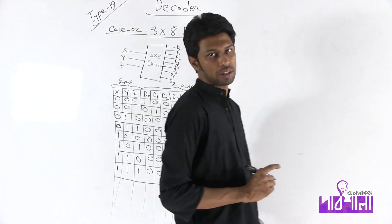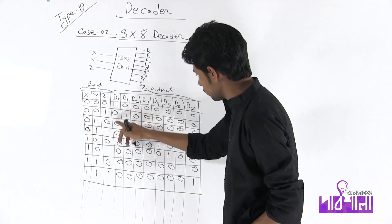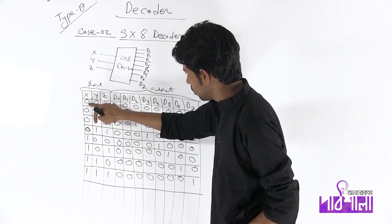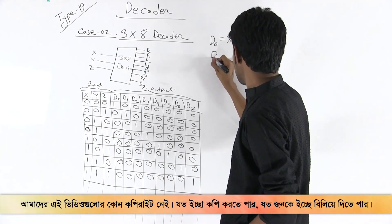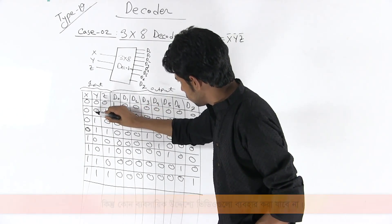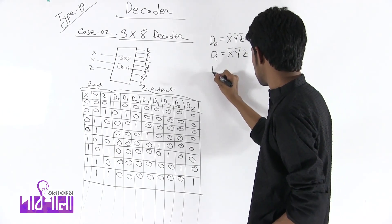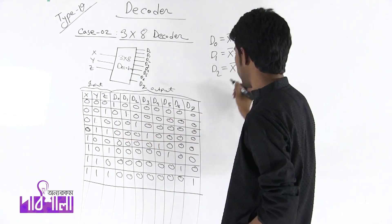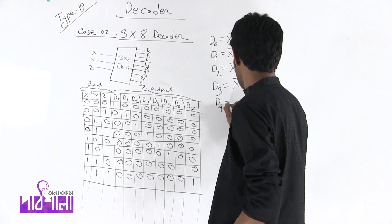This is the value of the output equal to the input. So the output at this point: D0's expression is X'Y'Z' — all complements. Then D1 = X'Y'Z. D2 = X'YZ'. D3 = X'YZ. D4 = XY'Z'. D5 = XY'Z. D6 = XYZ'. D7 = XYZ.